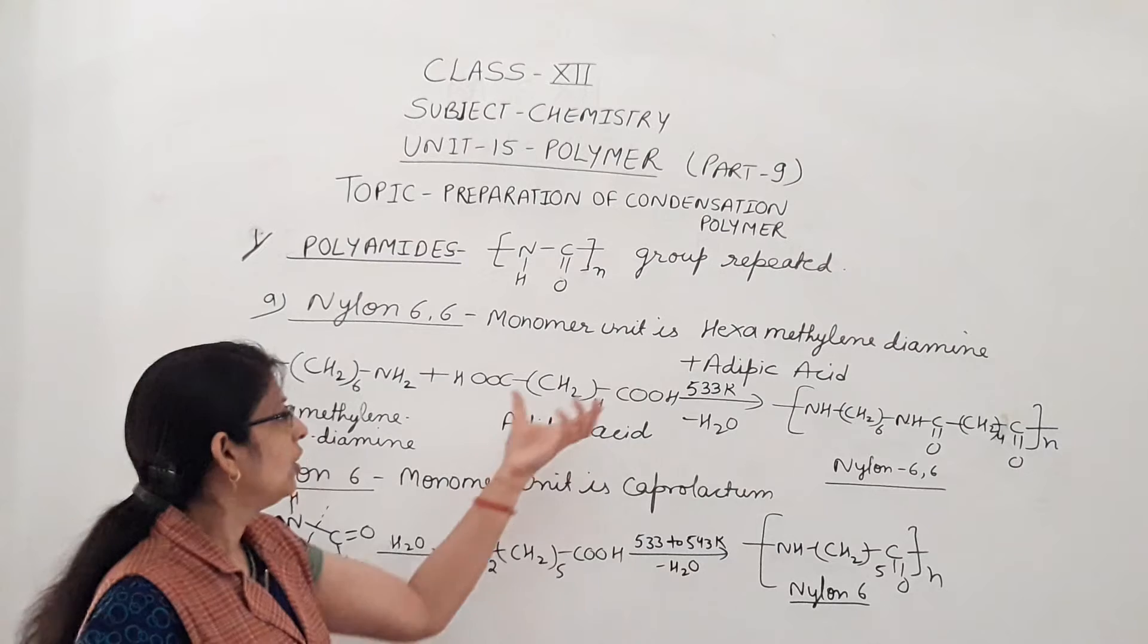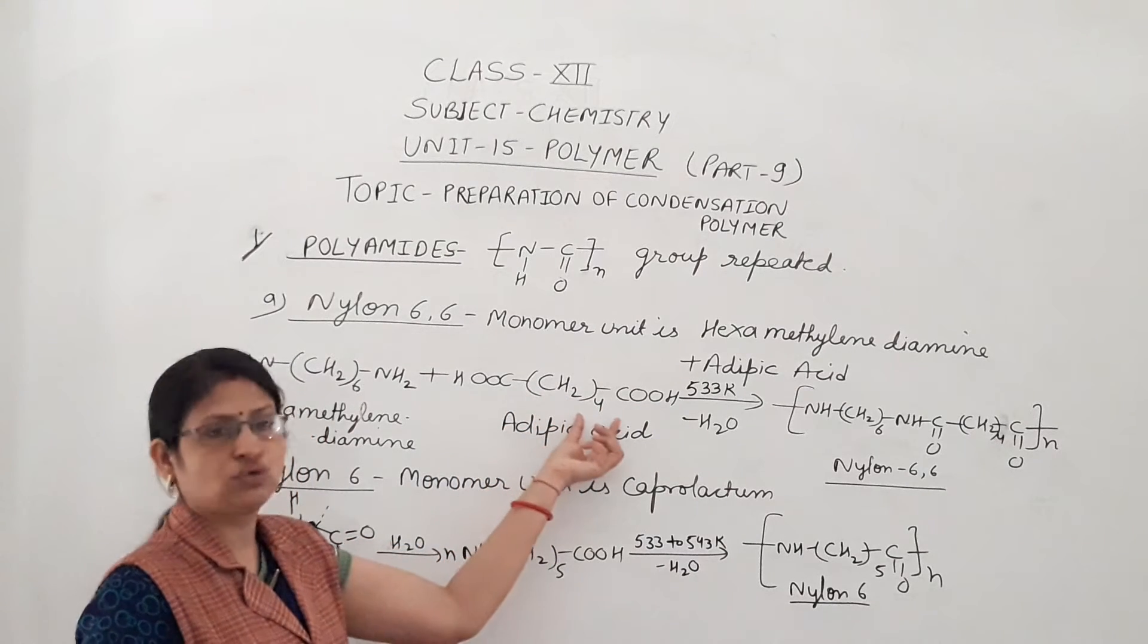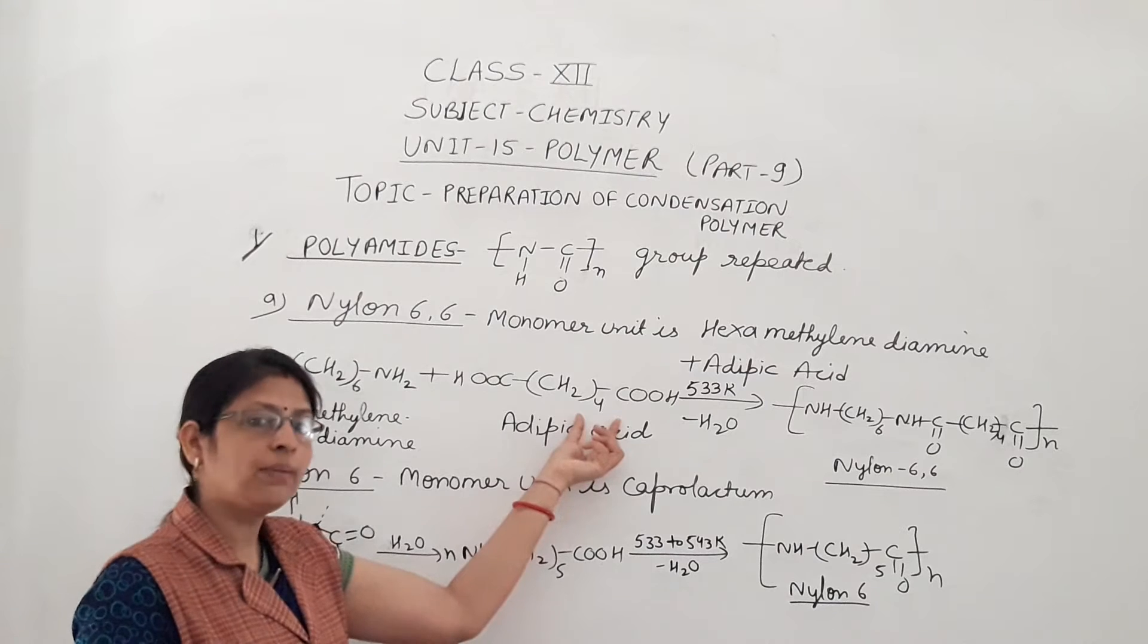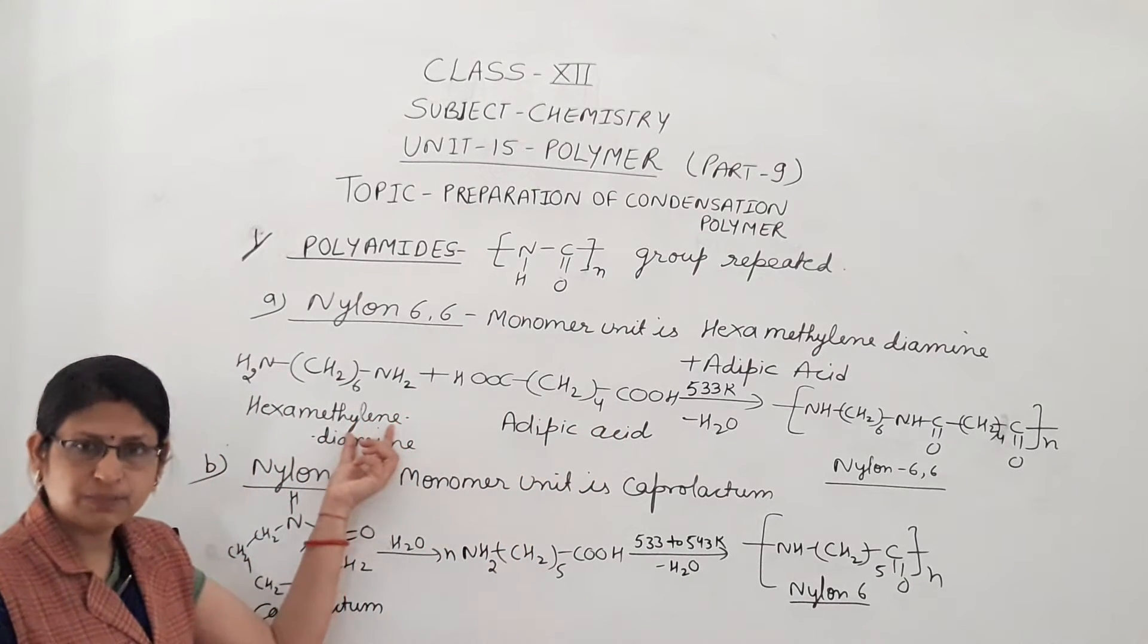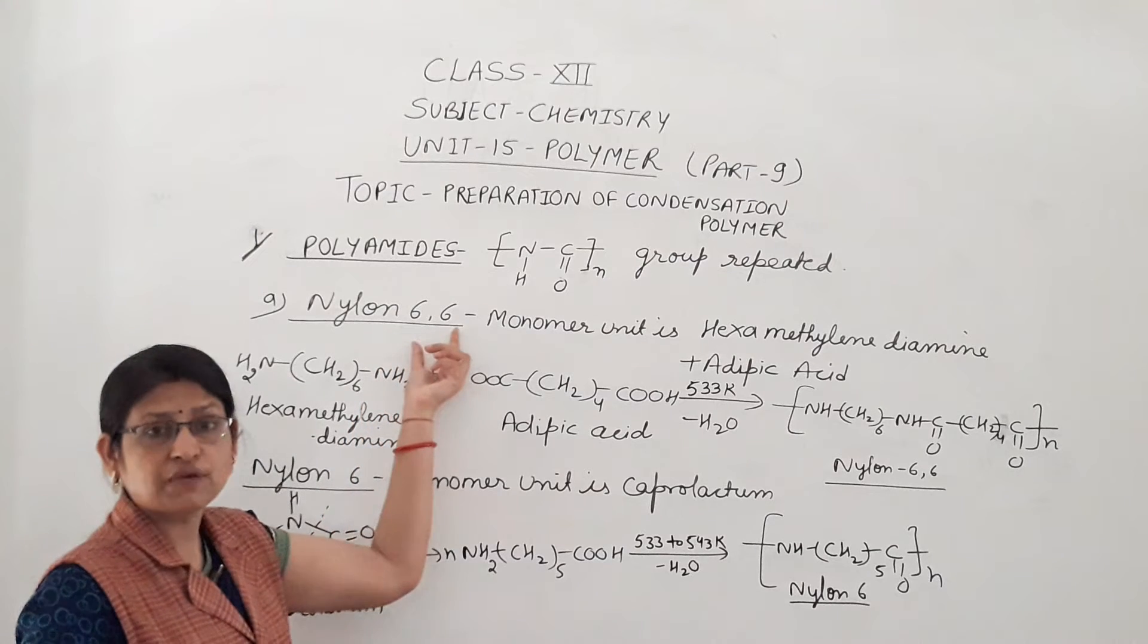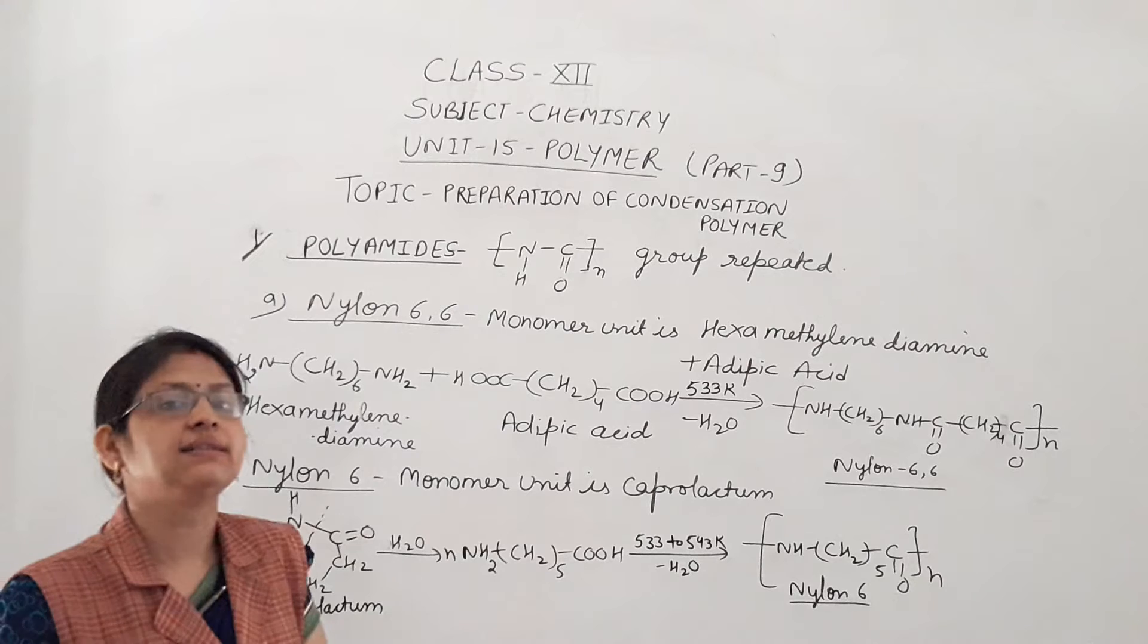What is adipic acid? Two carboxylic acid groups are present and (CH2)4. So total number of carbon here is 6. Here also 6 carbons are present. So significance of 6-6 here - both monomer units contain 6 carbons.